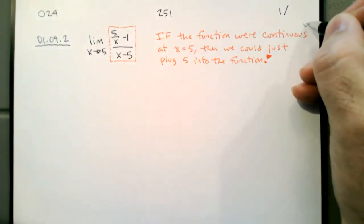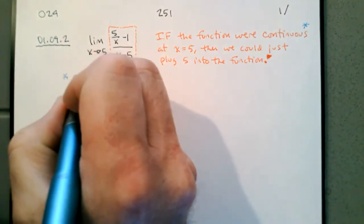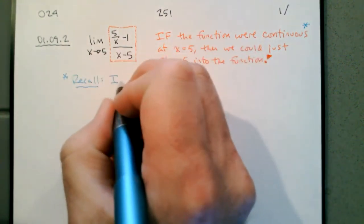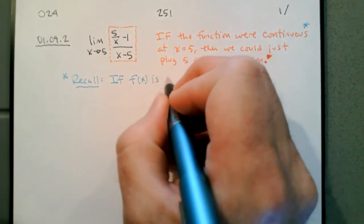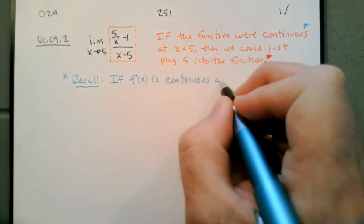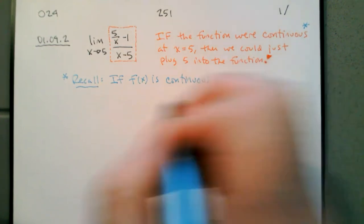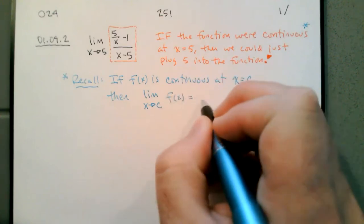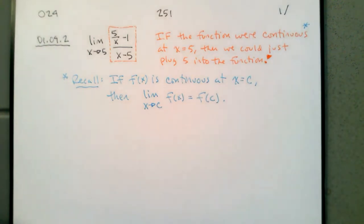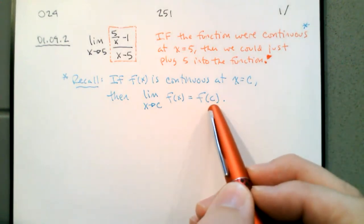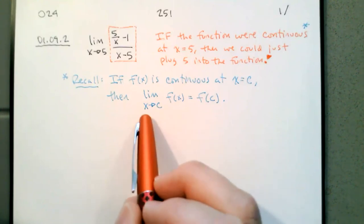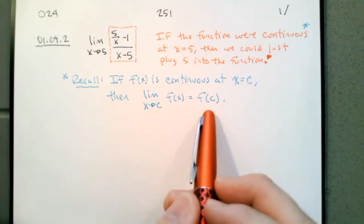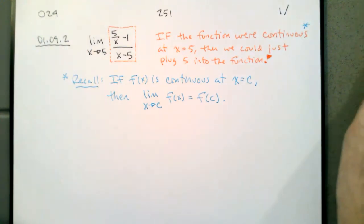Recall that if a function f(x) is continuous at some point x = c, then the limit as x approaches c of f(x) is equal to f(c). This is how we defined continuity. There were three aspects for a function to be continuous at a point: first, the function needs to be defined at that point; second, the limit of the function as x approaches that point needs to exist; and third, those two values need to be the same.